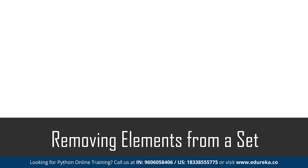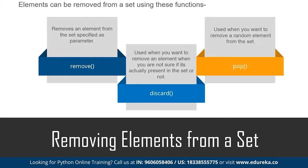To remove elements from a set, you can use the `remove`, `discard`, or `pop` methods. The `remove` method takes the element to be removed as a parameter, but if that element is not present, it throws an error. If you're not sure whether an element exists, use the `discard` method — it takes the element as a parameter and will not throw any error if the element is absent. The `pop` method removes a random element from your set.